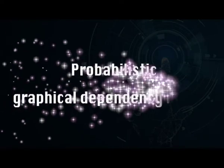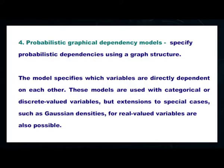Next comes the probabilistic graphical dependency model. Probabilistic graphical dependency models specify probabilistic dependencies using a graph structure. The model specifies which variables are directly dependent on each other. These models are used with categorical or discrete-valued variables, but extensions to special cases such as Gaussian densities for real-valued variables are also possible.